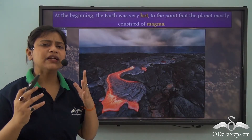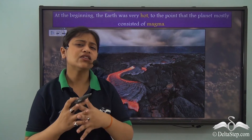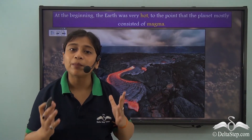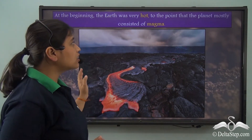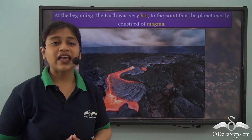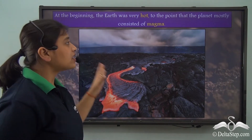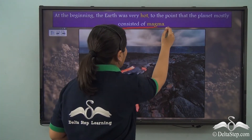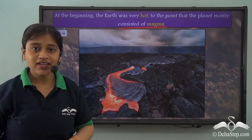It was believed that millions of years ago, during the formation of the earth, the earth was very very hot. It was hot to a point that most of it consisted of the magma.